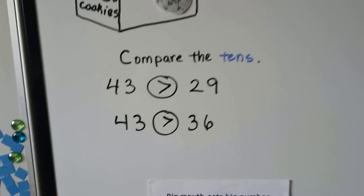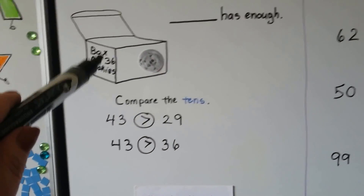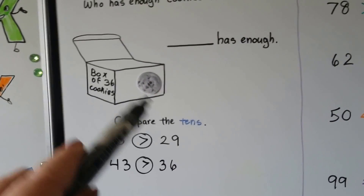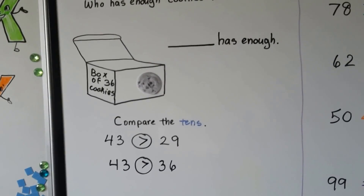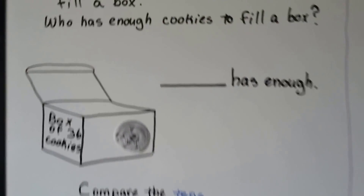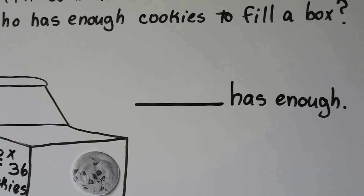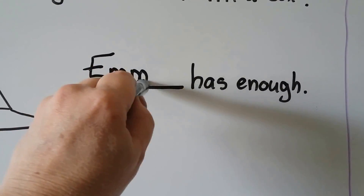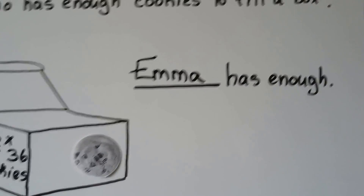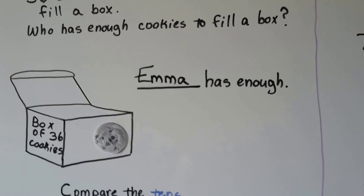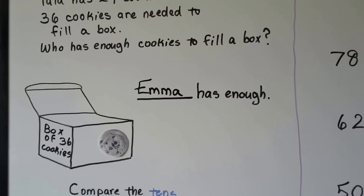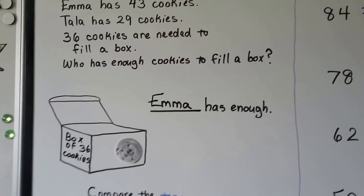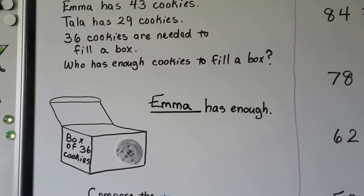So Emma has enough to put in that box. Emma has enough, and they can count and see if they have enough to fill another box.